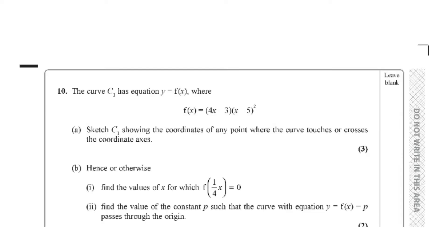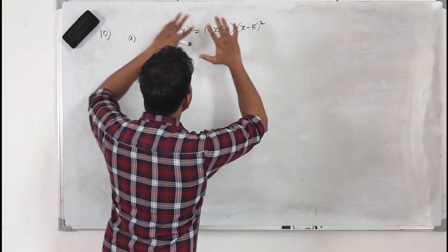Question number 10. The curve C1 has equation y equals f of x, where f of x equals (4x minus 3)(x minus 5) squared. Part a says sketch the curve, showing the coordinates of any point where the curve touches or crosses the coordinate axis. The question has three marks.